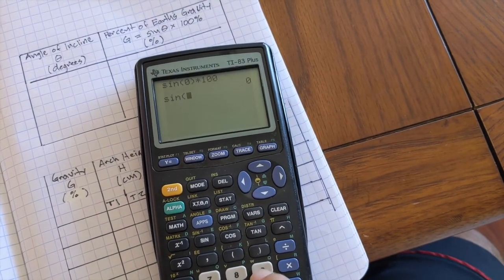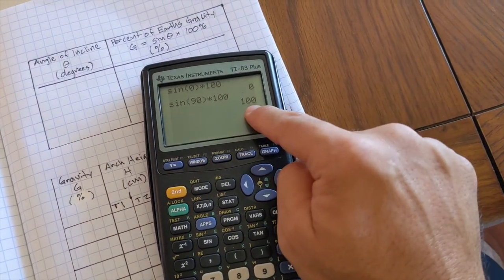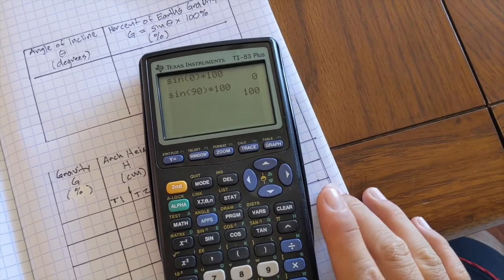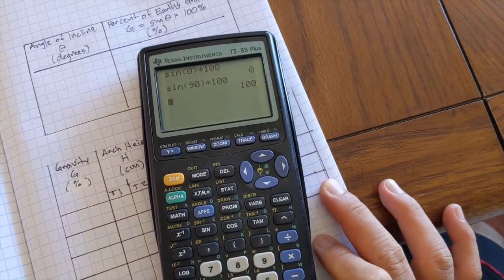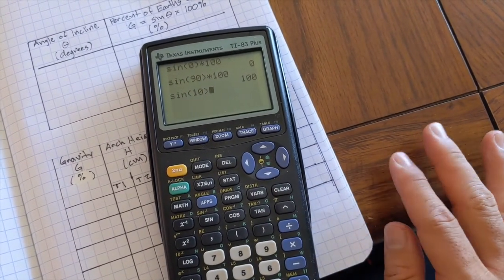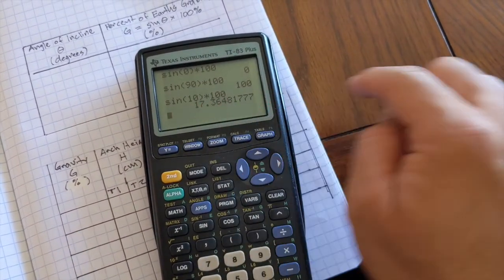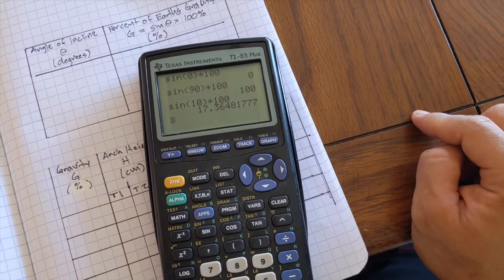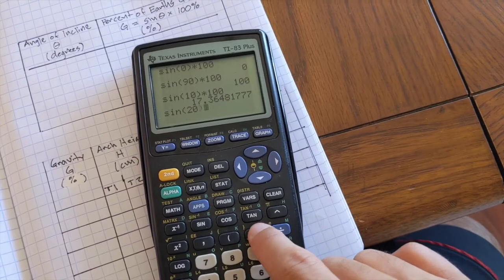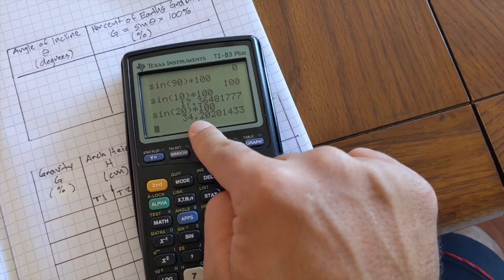What about if I had it at a 90 degree angle, which is straight up and down? It should make sense that I would have to have 100% of Earth's gravity because it's going straight up and down and that marble is going to feel the full force of gravity. Now, let's say for example, one of your angles makes the pan at 10 degrees. So if I do that, that's going to be 17% of Earth's gravity and maybe 20 would be 34% of Earth's gravity.